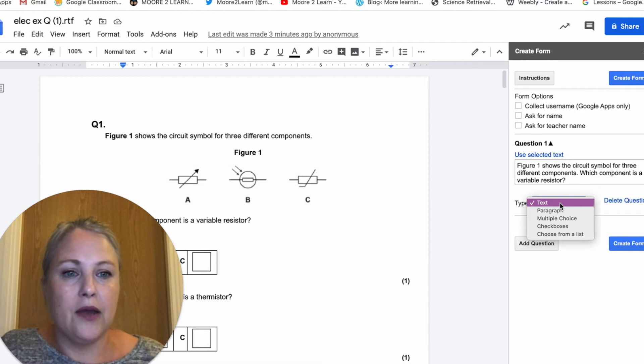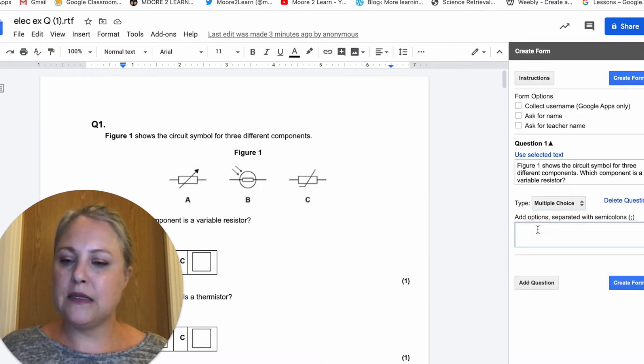So multiple choice, and my answers are A, B, C, or D. You just have to put them on different lines to make the multiple choice. I'll carry on, add a question to add question two and so on.